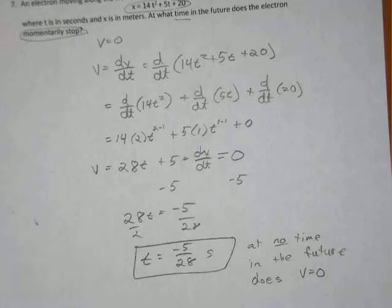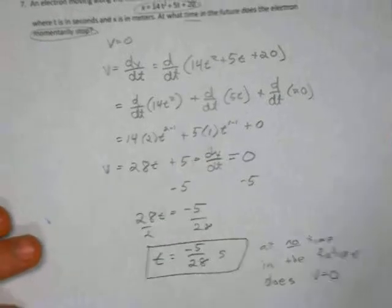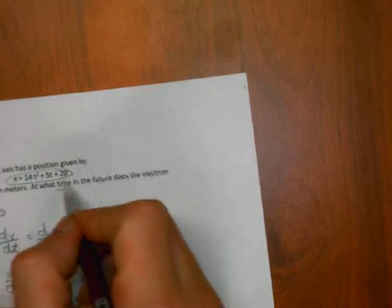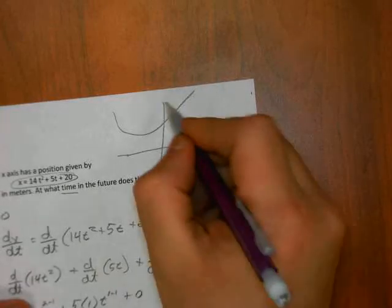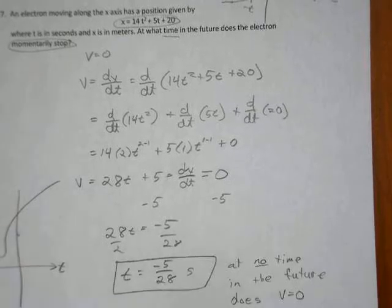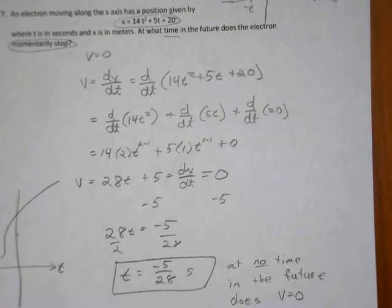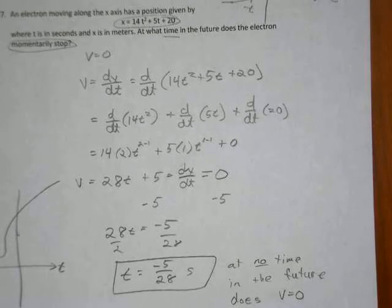So the derivative of the first term, 14t squared, is 14 times 2, bringing the 2 down, times t to the 2 minus 1, plus the derivative of this, which is 5 times 1, which is the exponent, times t to the 1 minus 1 power. Derivative of the constant is 0. You'll have to take my word for that.